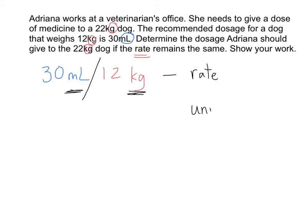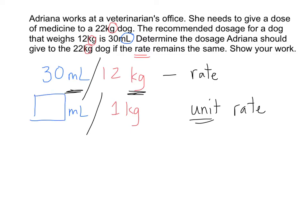But does this represent a unit rate? Remember, a unit rate is a rate in which the second term is 1. So we need to figure out how many milliliters you need for 1kg. How do we find the missing value? Well, think about how these two rates are related. What can I do to 12 to get to 1? Anything divided by itself gives 1, so if I divide 12 by 12 I get 1. We need to divide the first term by 12 as well. What's 30 divided by 12? 30 divided by 12 is 2.5. That means that for every 1kg we need 2.5ml of medicine.